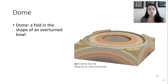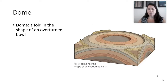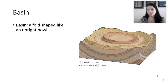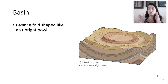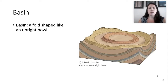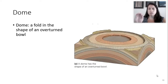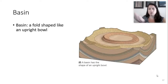Other structures we see in the subsurface that are a bit harder to draw is a dome. This is a fold in the shape of an overturned bowl, versus a basin, which is an upright bowl. We see domes and basins when there are stresses occurring in multiple directions - not just two directions to cause one fold, but folded in all dimensions.